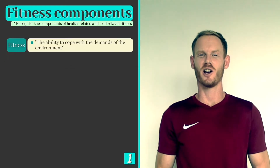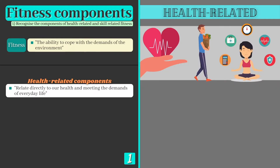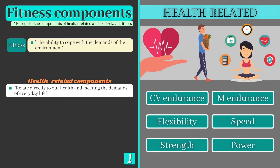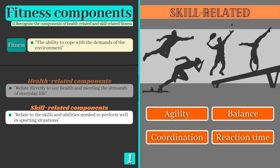There are 10 components you need to know and 2 separate categories into which they can be sorted. Health related components are those that relate directly to our health and meeting the demands of everyday life. The 6 health related components are cardiovascular endurance, muscular endurance, flexibility, strength, speed and power. The remaining 4 are skill related components that relate to the skills and abilities needed to perform well in sporting situations. They are agility, balance, coordination and reaction time.